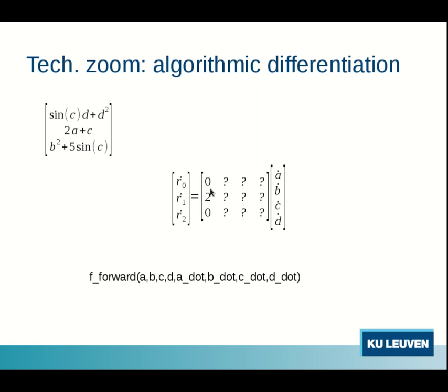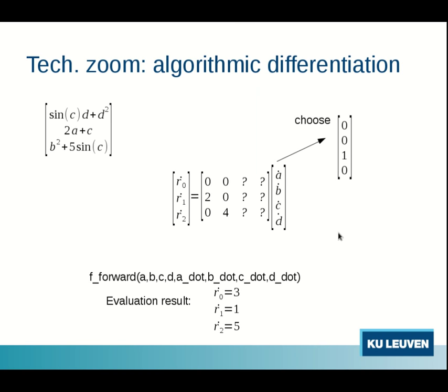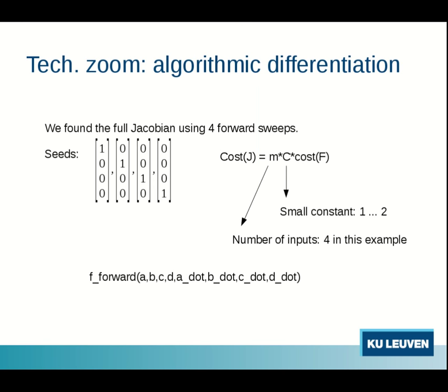For the second column we choose other seeds. Zero one zero zero and so on. So we seed several times. How many times you have to seed? Well the number of inputs. So in this case four. And we seed it with slices of the unit matrix as you can see.